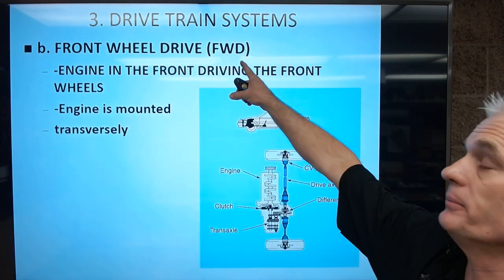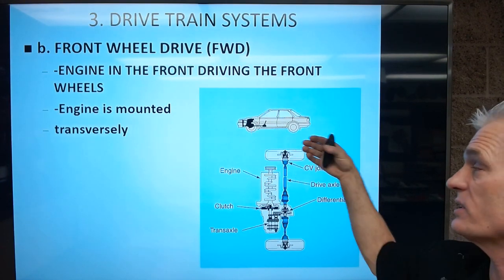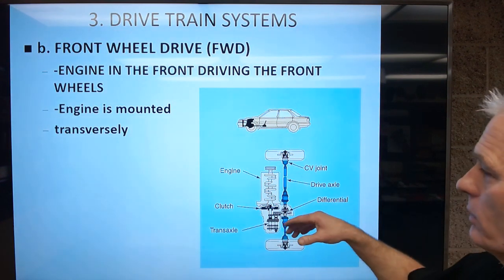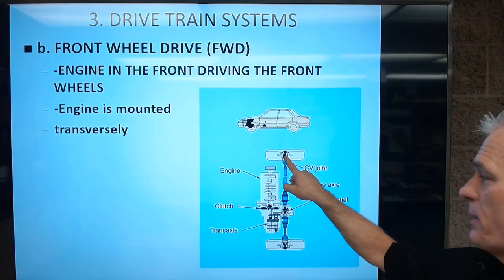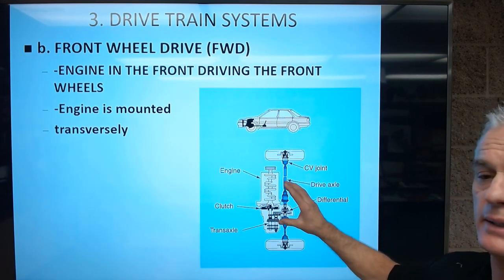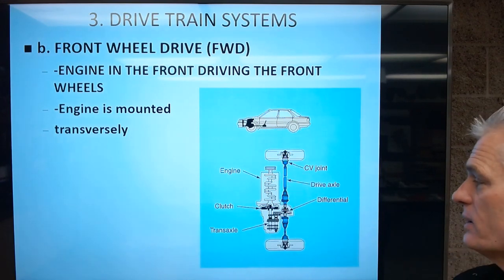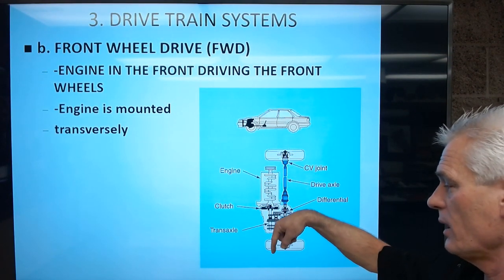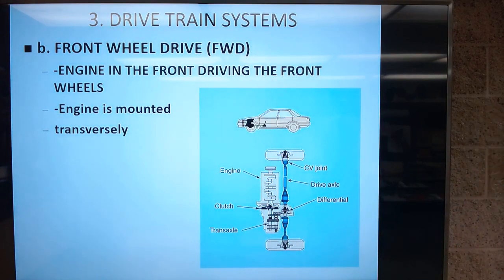Front-wheel drive (FWD) is where the engine is driving the front wheels, so the car is being propelled by the front wheels pulling the car down the road, whereas rear-wheel drive had the rear wheels pushing. In a front-wheel drive vehicle, almost without exception, the engine is mounted transversely — the front of the engine is over to the passenger side and the transmission is to the driver's side. Late 80s and 90s Hondas had the engine on the driver's side, but Honda has since gone back to having the front of the engine at the passenger side.